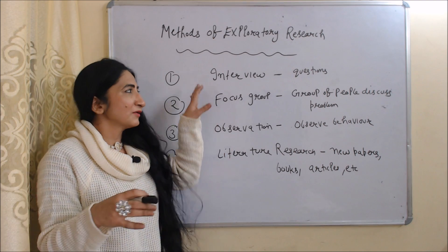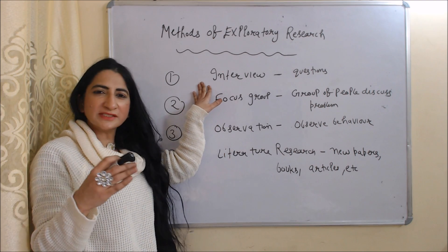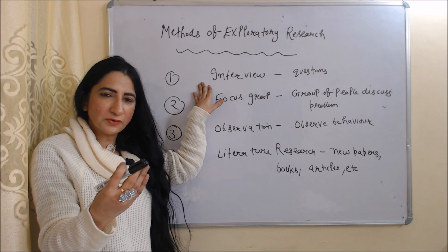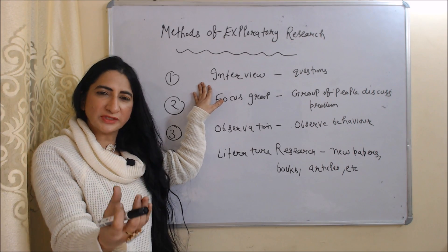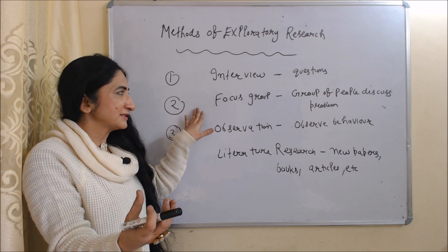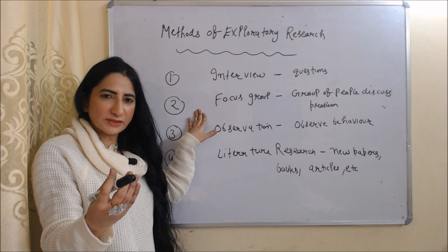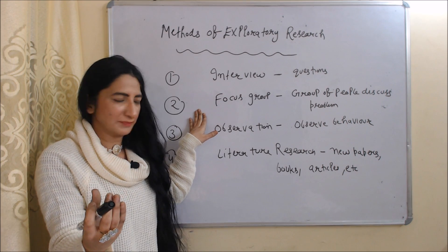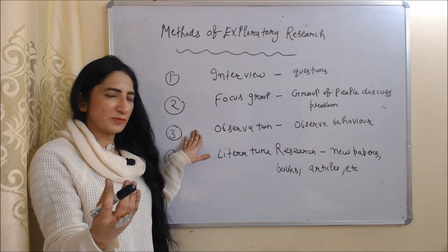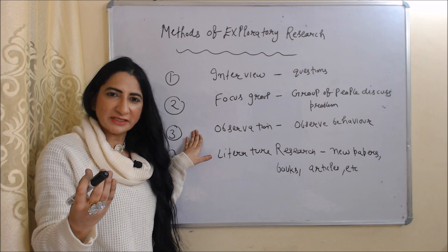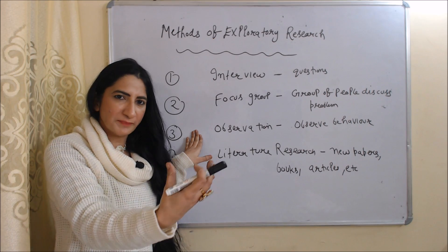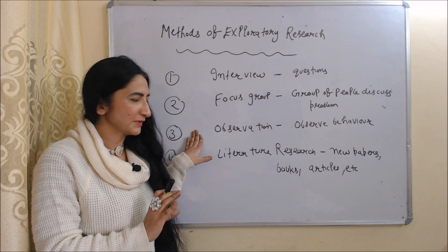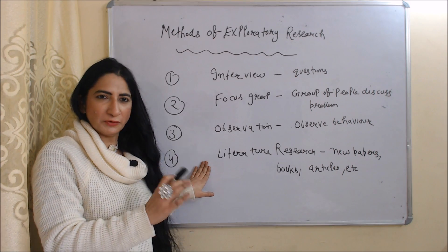Now we will see some methods of exploratory research. First is the interview method — we ask questions to people to gather information. Second is focus group — a group of people discuss the problem together. Third is observation — we simply observe the behavior of people and get information from that behavior.